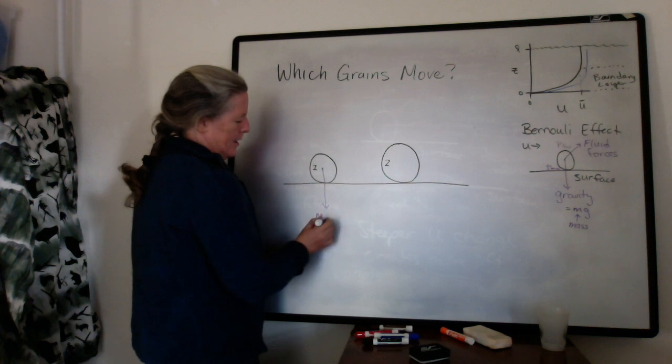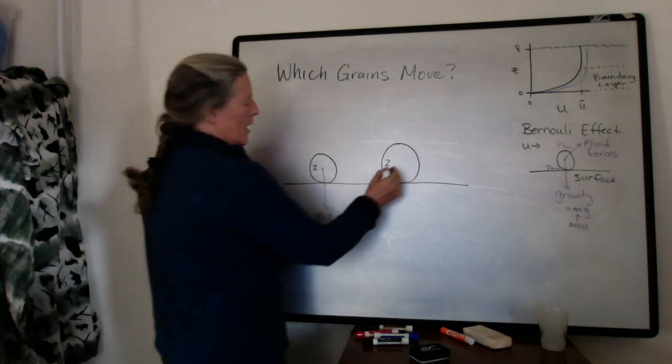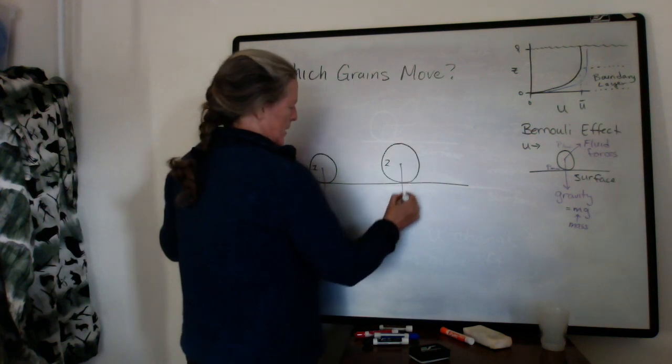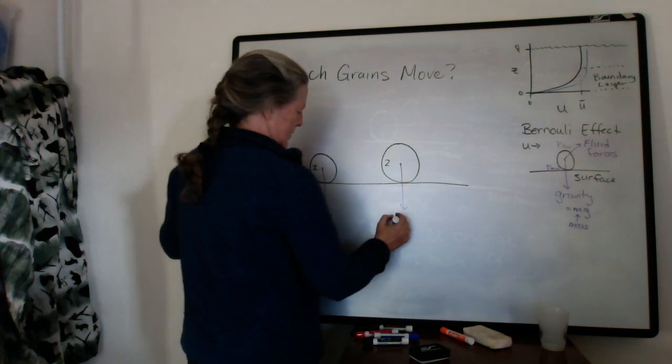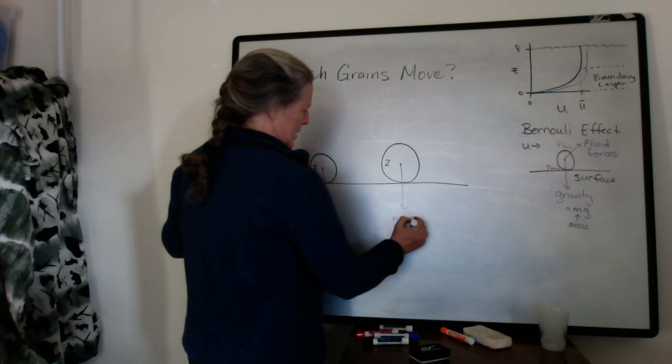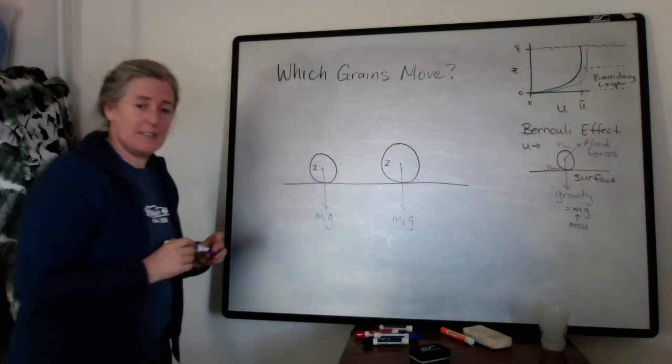But we can start looking at the balance of forces on the different grains. So let's say grain 1 has mass 1, m for mass, and g for gravity.